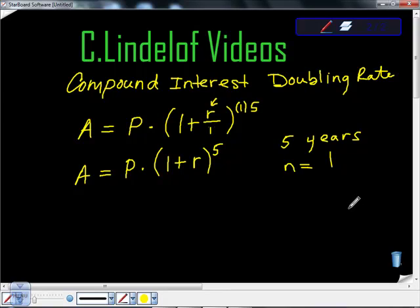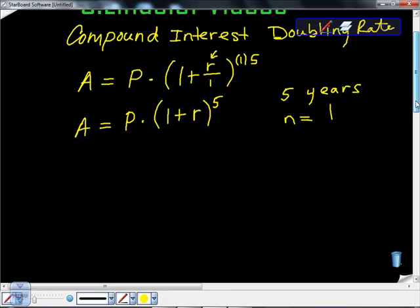Now we're down to having three variables: A, P, and r. We just want r. We don't know what our principal amount is, but we know that as a result of this investment, we want to get twice that much back. So A should be equal to 2P.